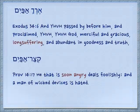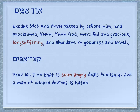Now there's an interesting idiom which we see frequently, and that is Erech Apayim. This literally means erech is long, and apayim is the nose — it's dual because you have two nostrils — and this means long-suffering. Exodus 34:6: 'And Yehovah passed by before him and proclaimed, Yehovah, Yehovah God, merciful and gracious, long-suffering — Erech Apayim — and abundant in goodness and truth.'